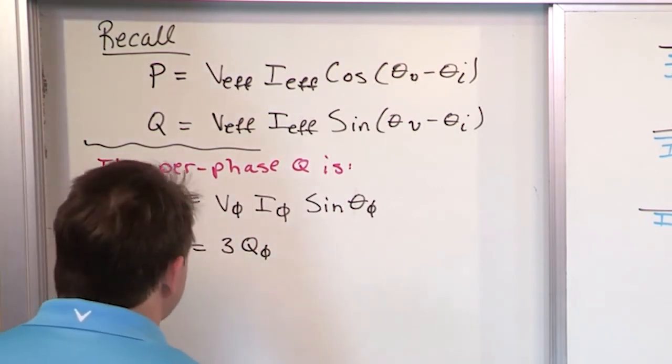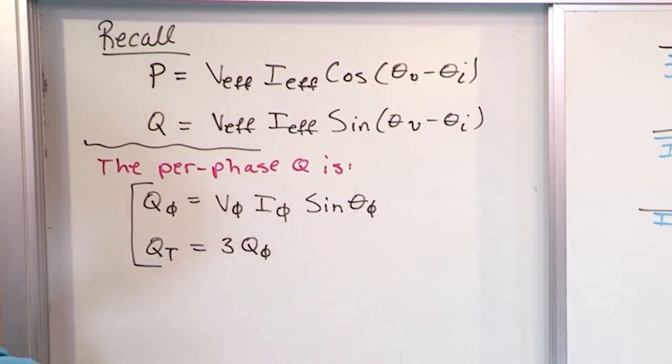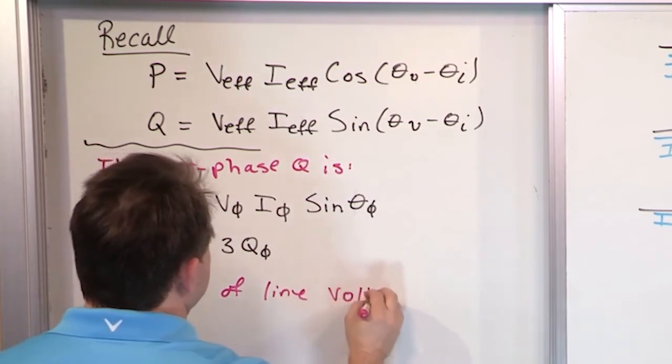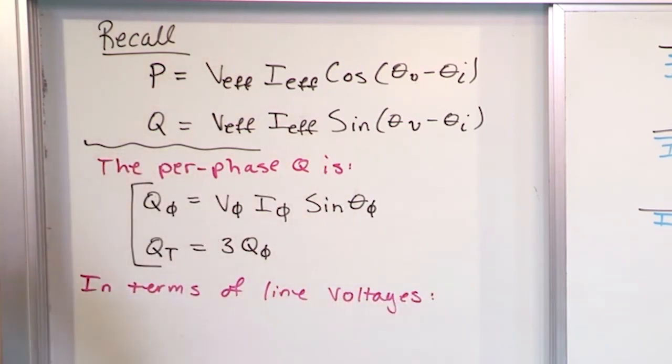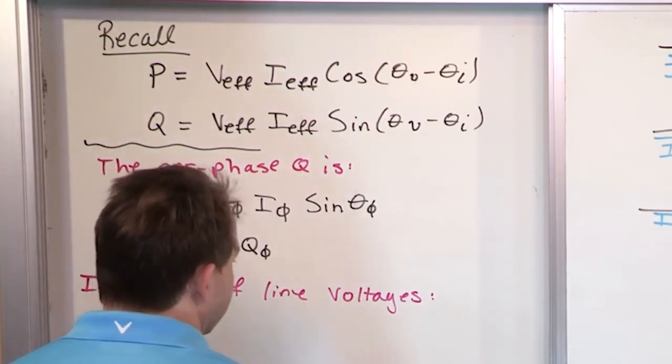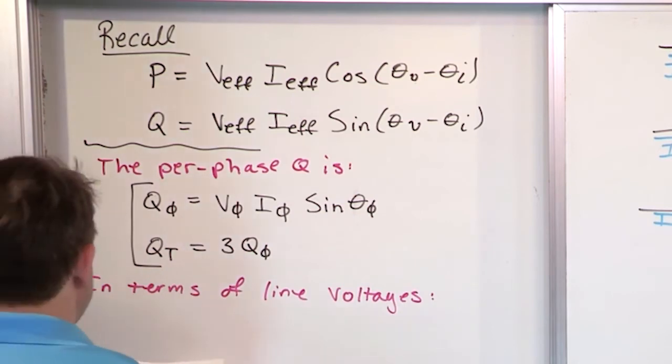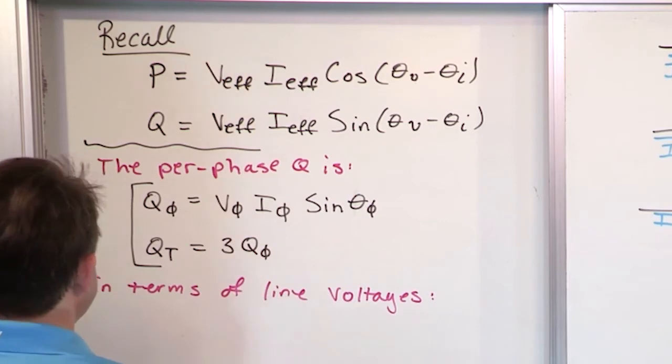Now, just like before, this is calculating the reactive power if you know the phase quantities. But what if you don't know the phase quantities? What if you know the line quantities? So in terms of the line voltage, right, because remember, line voltage and phase voltage is different for a Y circuit. Then, again, I've done this in the past, but what we're going to do is we're going to start here.